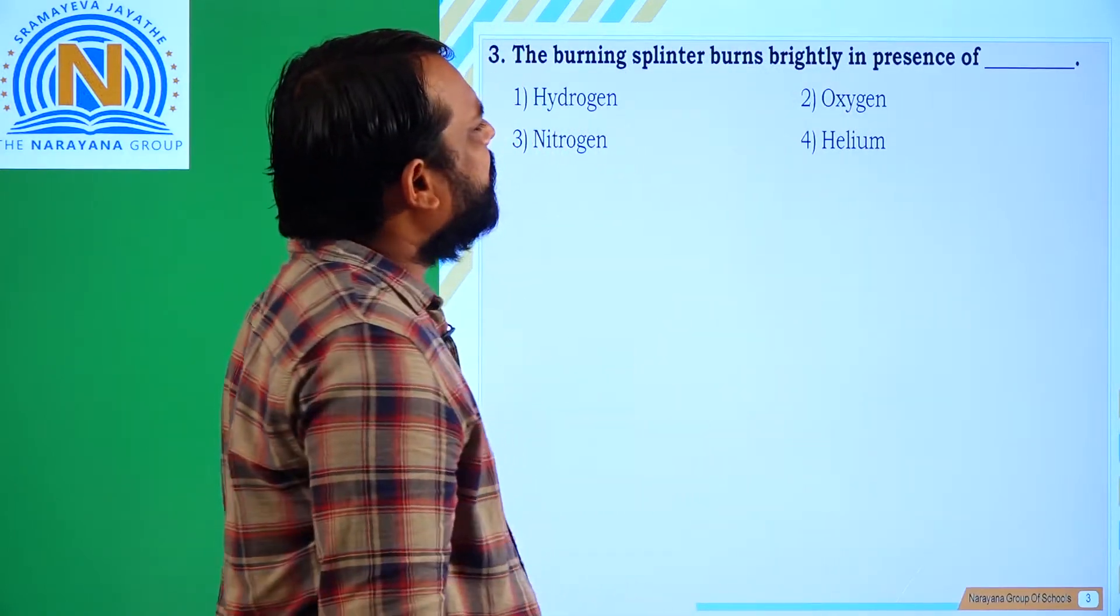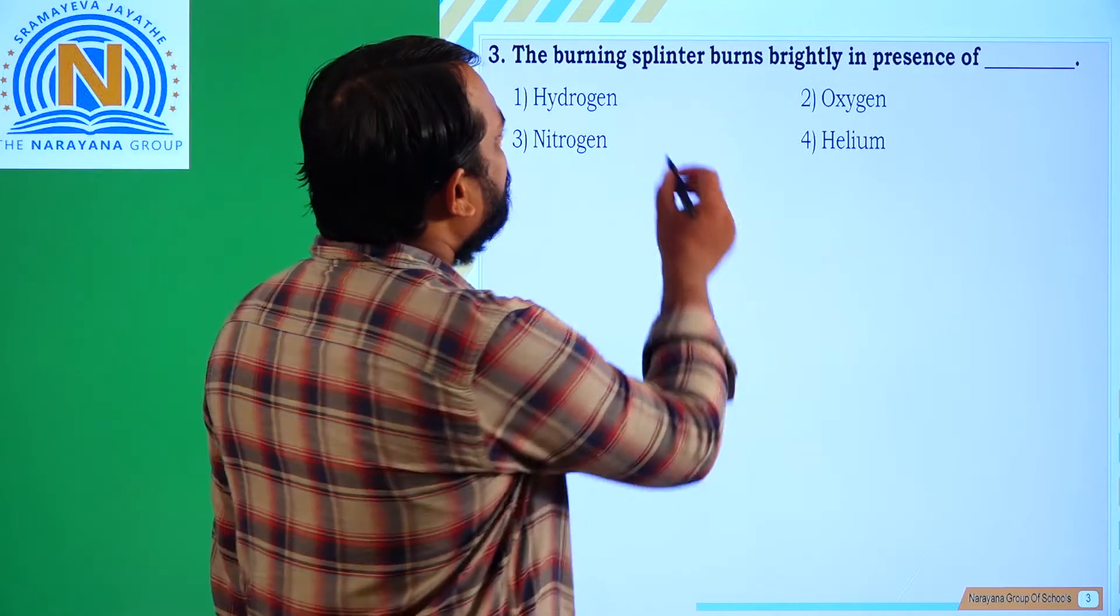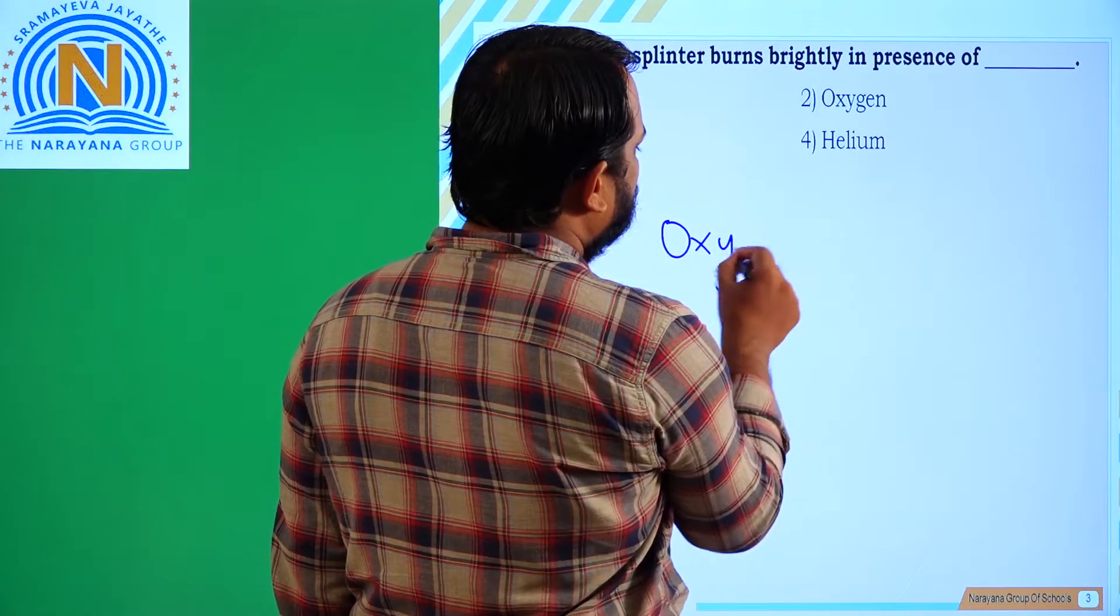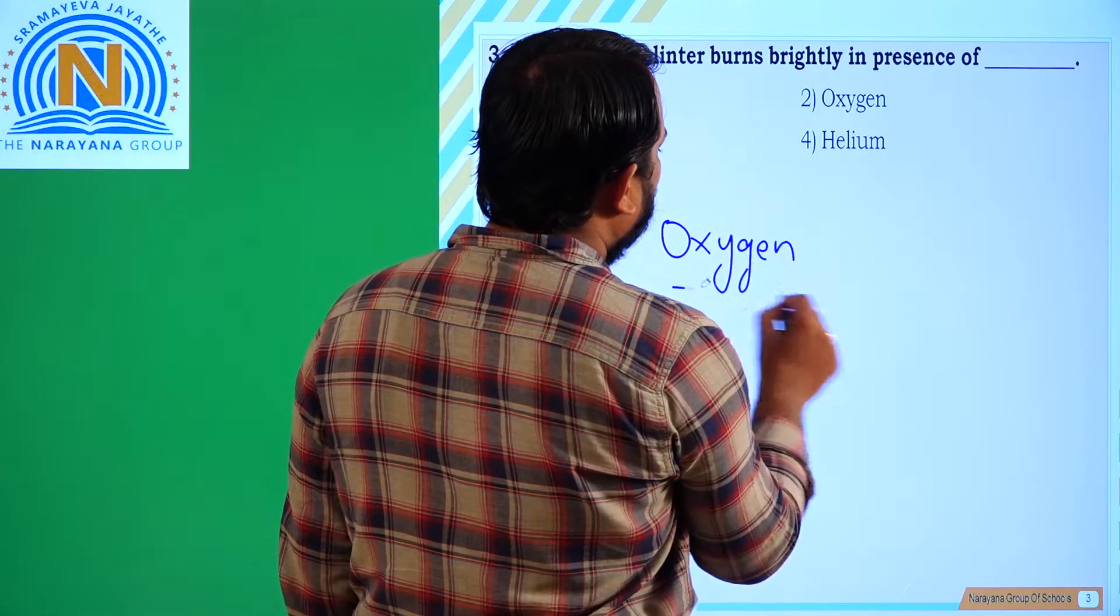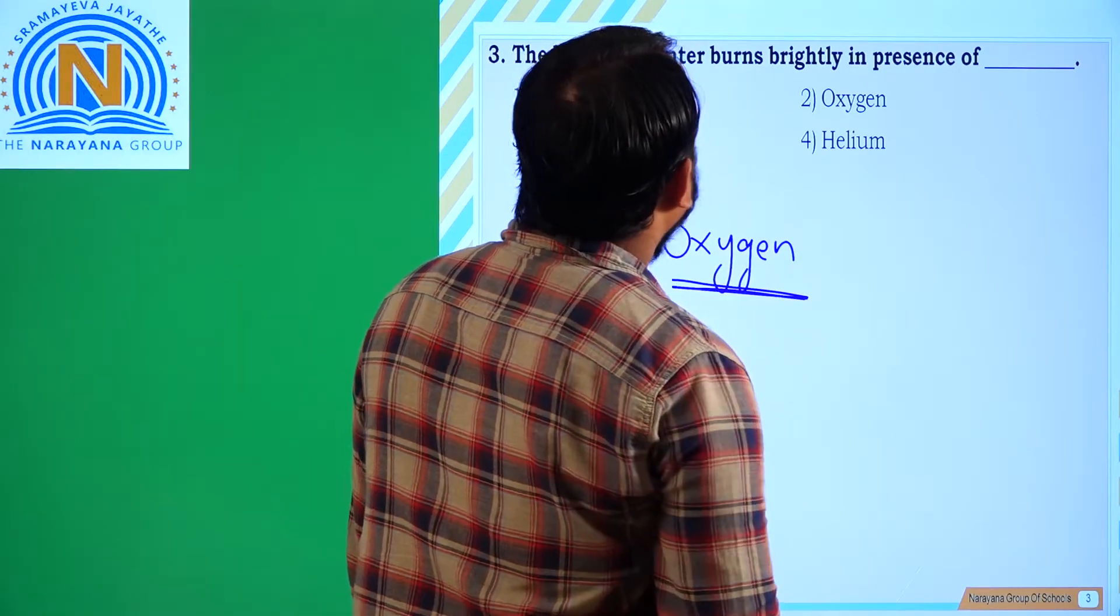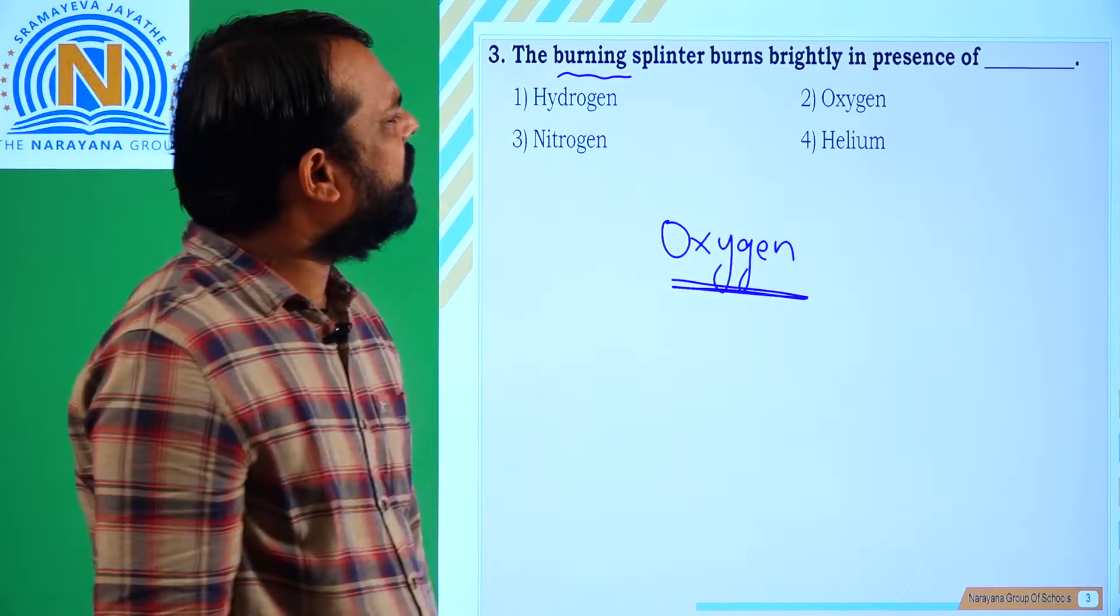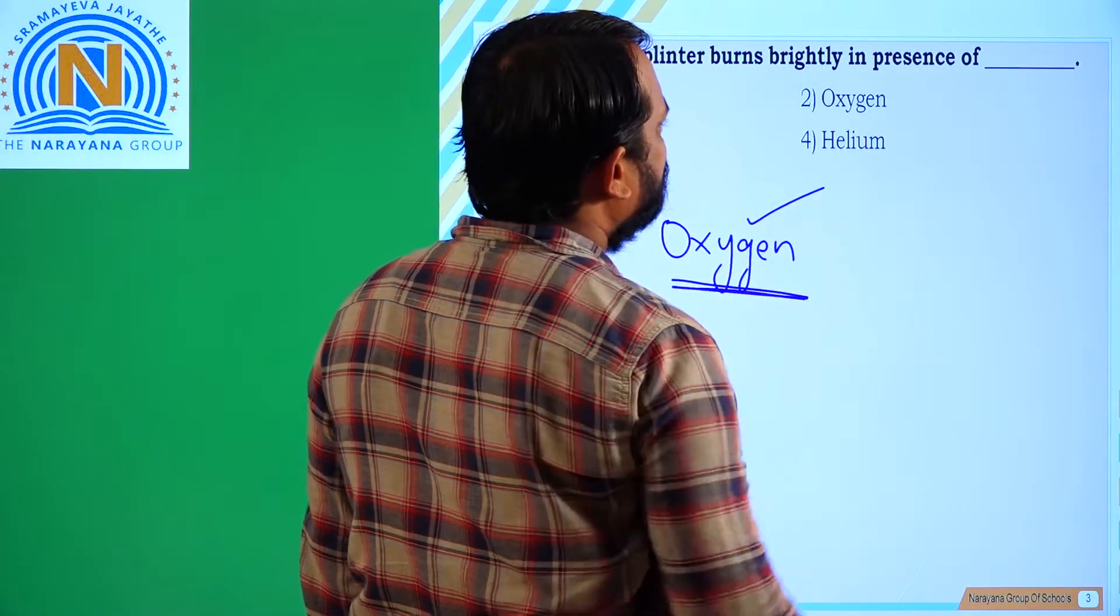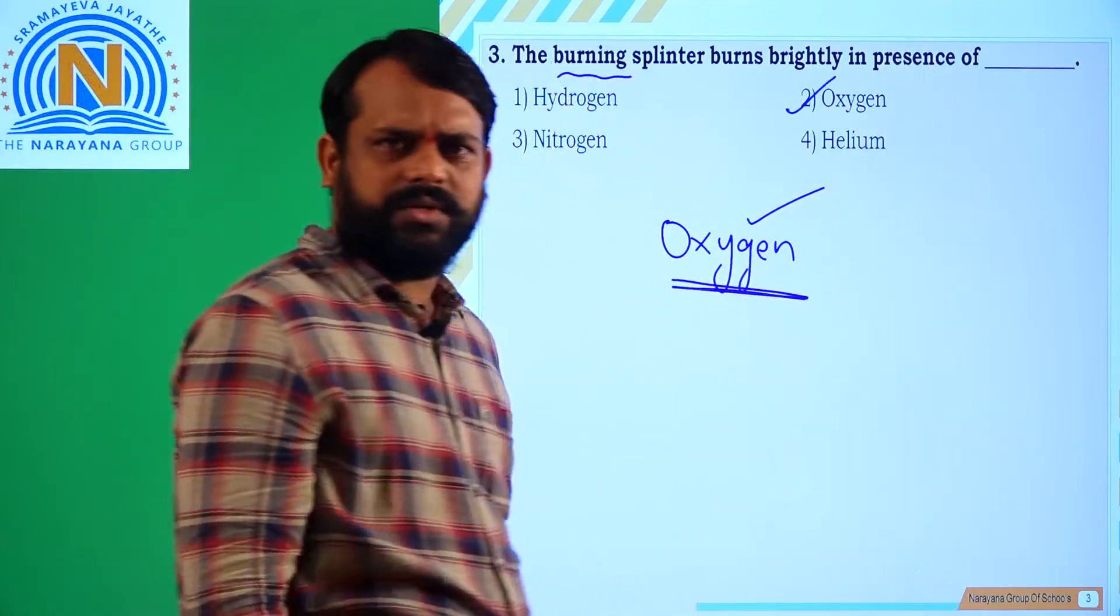The burning splinter burns brightly in presence of. Generally, the cause of burning is only because of oxygen. If more is the oxygen, more is the flame. So the burning splinter burns brightly in presence of which gas? Oxygen gas. Which option? Second option.